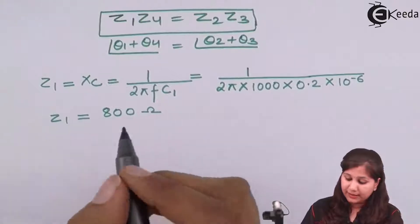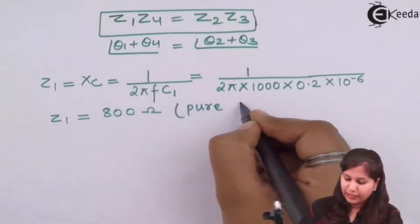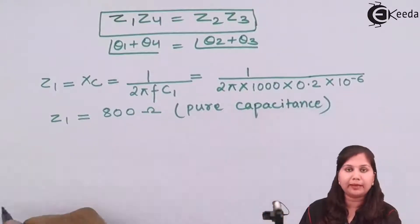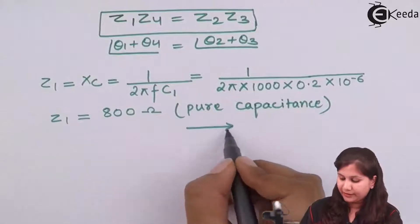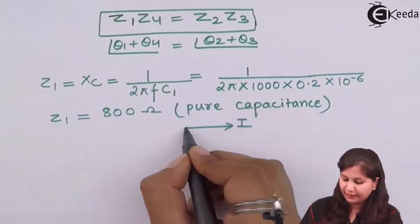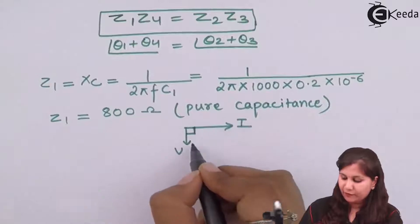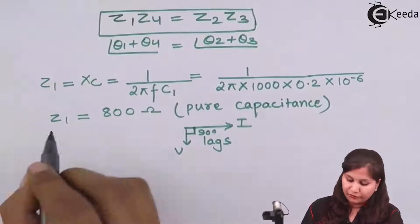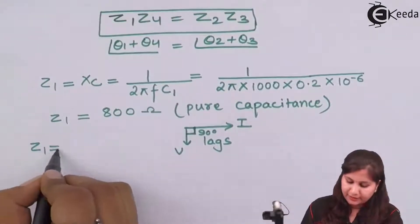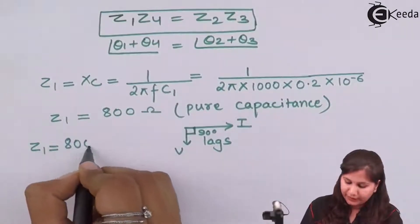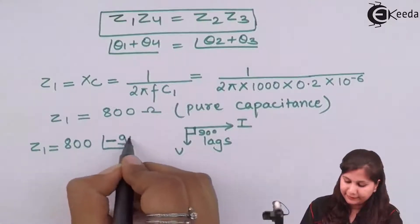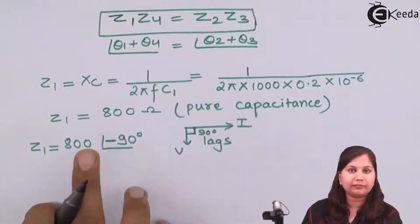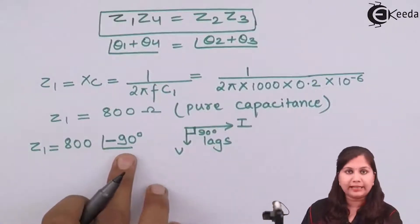Since this is a pure capacitance, the voltage lags the current by 90 degrees. So the phase of Z1 is 800 ohms at −90 degrees, because the voltage is lagging we use minus 90 degrees.